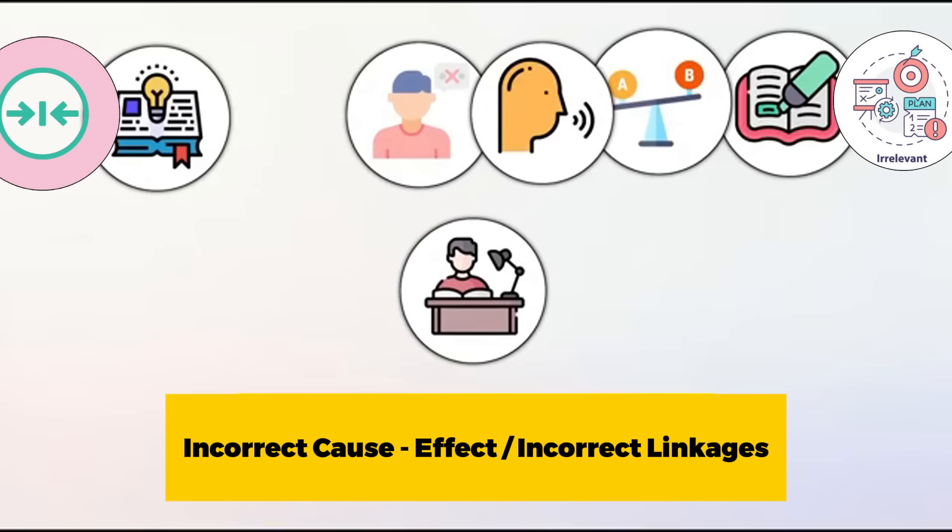The third strategy is to avoid incorrect cause-effect relationships or incorrect linkages. In this kind of option, two things — A and B — are mentioned. A is factually correct and B is factually correct. However, in the option, these two things are linked, as if A has caused B. Both facts are correct individually, but that linkage between A and B makes the option wrong. I'll use two examples because this one is really tricky.